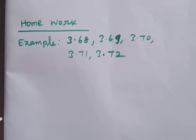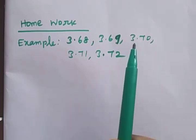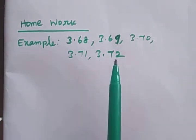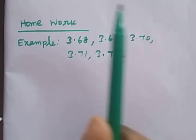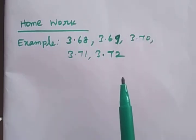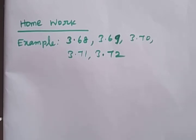Hi students. Today we covered examples 3.68, 3.69, 3.70, 3.71, and 3.72 — five sums in total. Thank you students.